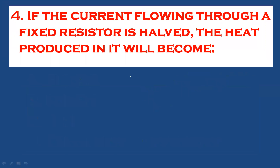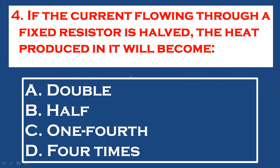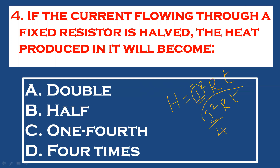Question 4: If the current flowing through a fixed resistor is halved, the heat produced in it will become what? Heat H = I²RT. The current is halved, so I becomes I/2. The new heat is (I/2)² × R × T = I²RT/4. The heat will be 1/4th of the previous value. The answer is 1/4th.